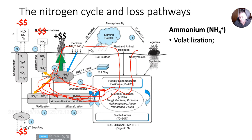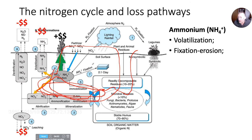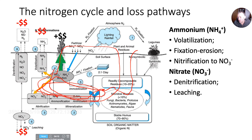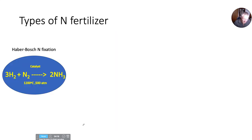Ammonium can be lost through volatilization. It can be fixed to soil particles and then eroded away, and it can be nitrified to become nitrate and then lost through denitrification and leaching. So we're going to focus mainly on the volatilization pathway today.